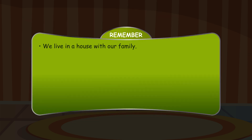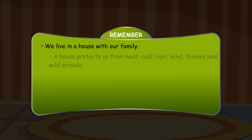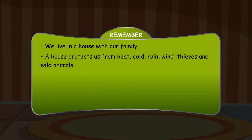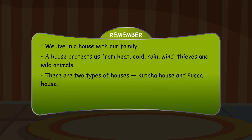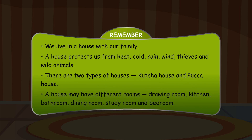Remember: We live in a house with our family. A house protects us from heat, cold, rain, wind, thieves and wild animals. There are two types of houses: Kucha House and Puka House. A house may have different rooms — drawing room, kitchen, bathroom, dining room, study room and bedroom.